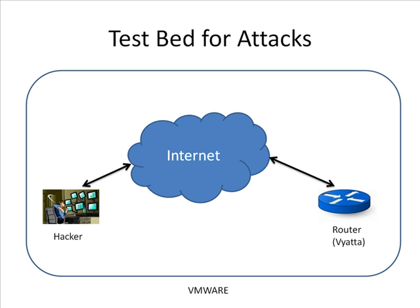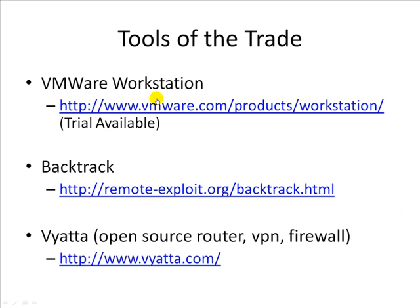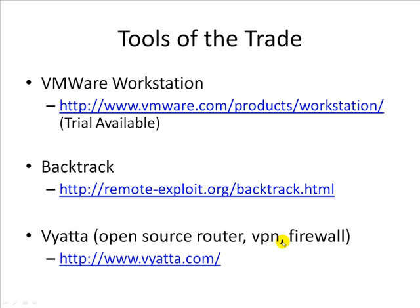Here is our test bed for the attacks. Basically everything is going to be run inside VMware, simply because I cannot afford a 7600 which might run into a couple of hundred thousand dollars. In this VMware environment we are going to have a software-based router using Vyatta, and then we will have a hacker machine which will be a BackTrack machine, and both will have connectivity using the IP layer. I will be using VMware Workstation, which you can download from vmware.com — a trial version is also available. BackTrack can be downloaded from its website, and Vyatta, which is an open source router/VPN/firewall, can be downloaded from vyatta.com. I urge you to download all these tools, create the setup, and follow along with the attacks.